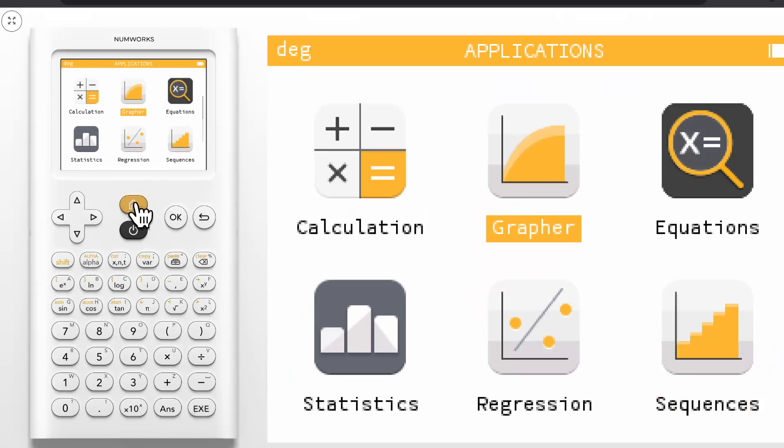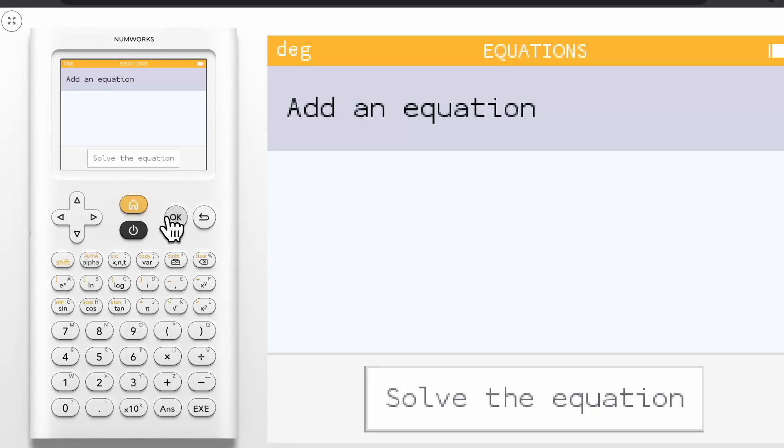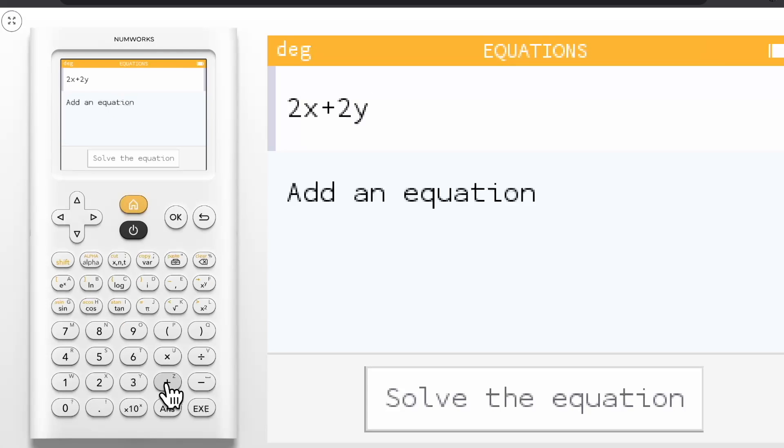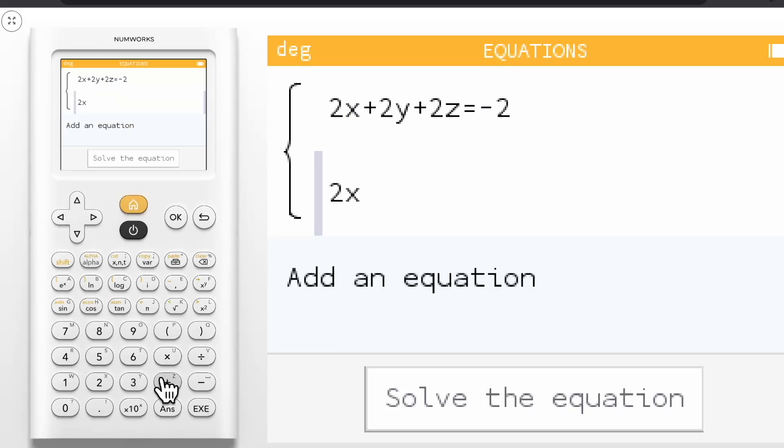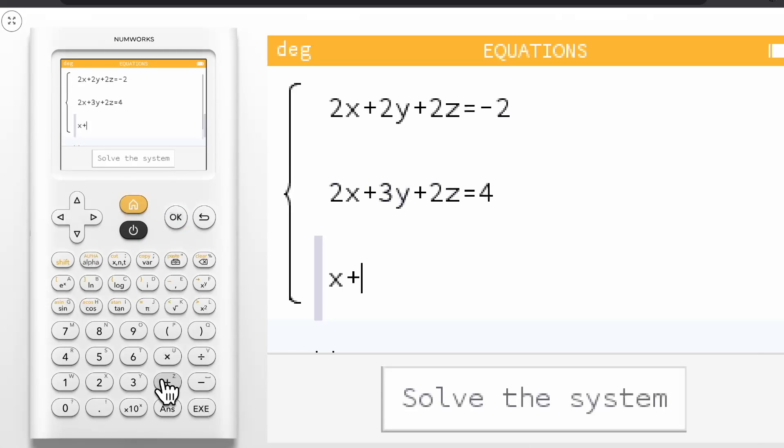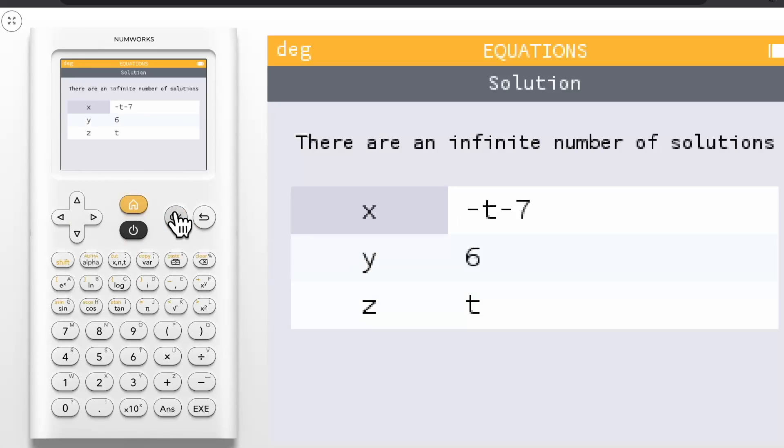Next, let's head to the equation application. Our international baccalaureate teachers asked that when solving systems of equations with infinite solutions, we would return parametric solutions, and we wanted to make that happen. Let's solve the following system: 2x plus 2y plus 2z equals negative 2, 2x plus 3y plus 2z equals 4, and x plus y plus z equals negative 1. Now when we navigate down to solve the system and press OK, we report there are an infinite number of solutions, as well as a parametrized solution where x equals negative t minus 7, y equals 6, and z equals t.